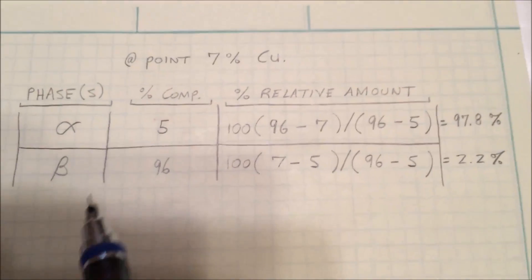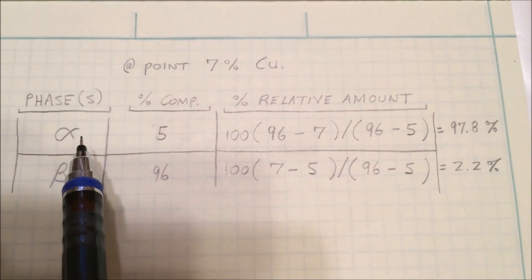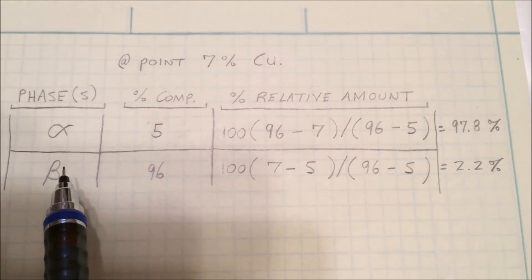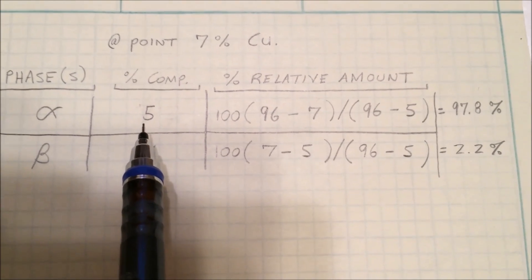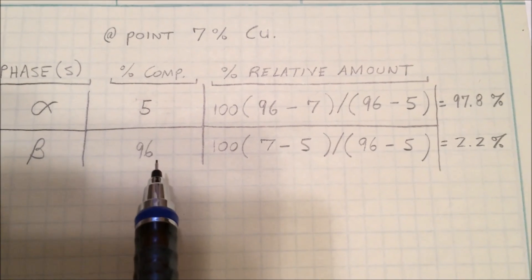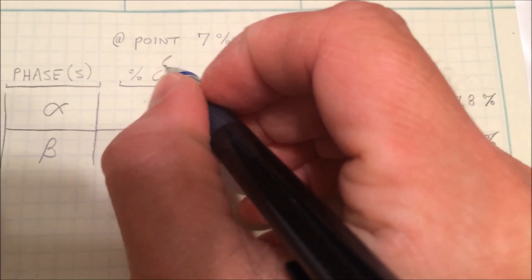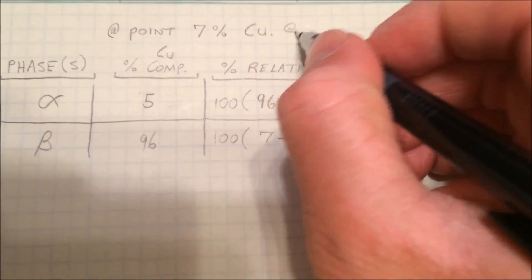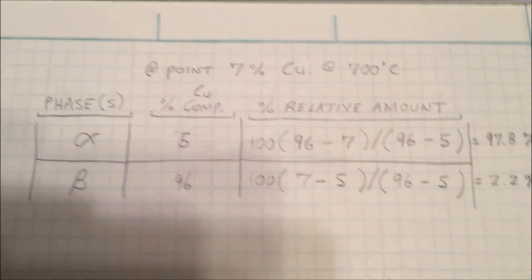So we'll move over to the engineering paper. If you're at 7% copper at 700 degrees, you have two phases present: alpha and beta. Based on the vertical line, one's at 5% composition of copper and one's at 96% composition of copper. We'll just put 'copper' and '700 degrees Celsius' here to define those.